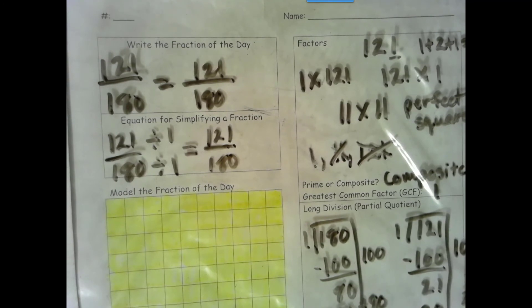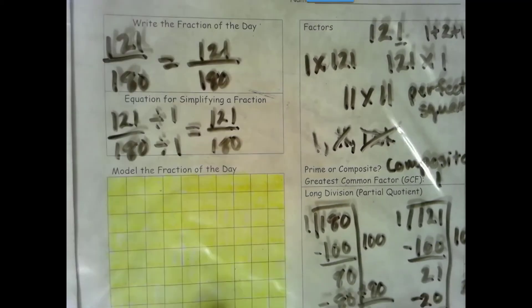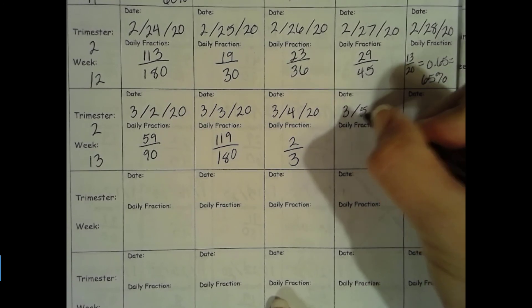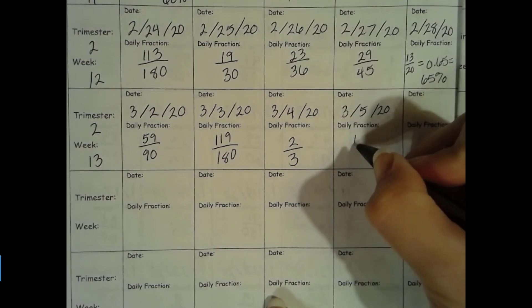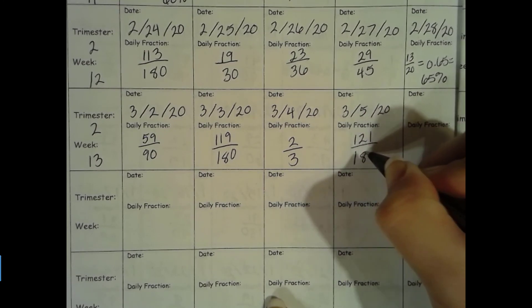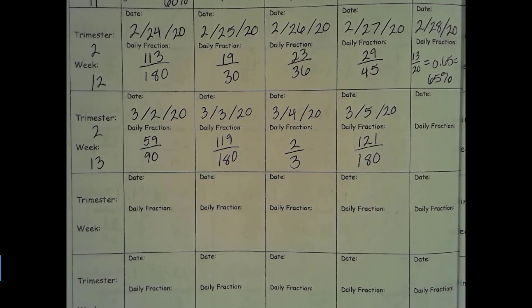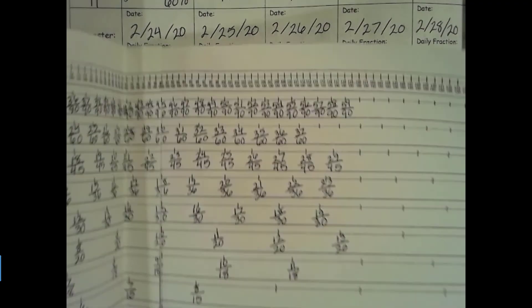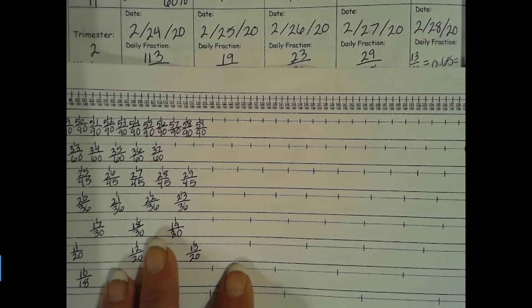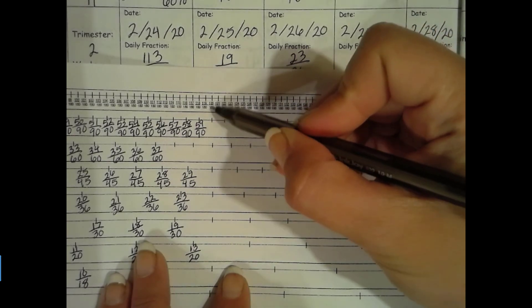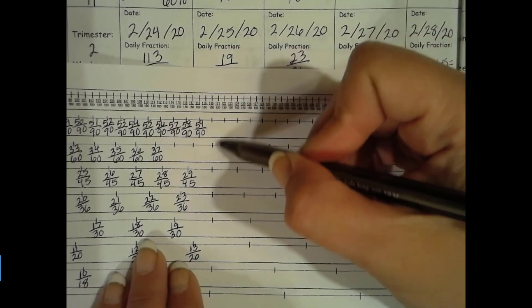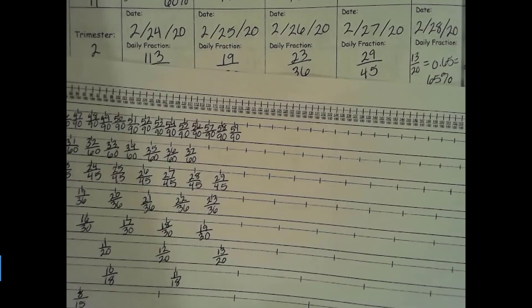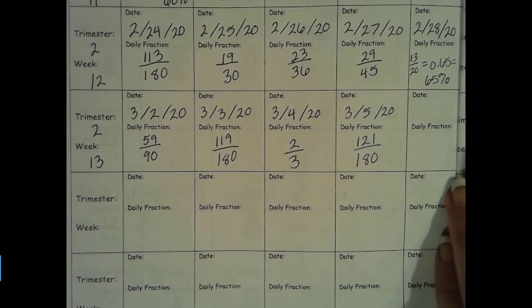Let's go ahead and fill in our data collection page. We are on trimester 2, still week 13. Today is 3/5/2020, and our fraction for today, 121 out of 180. The greatest common factor was 1, so we did groups of 1. That means you don't have to get your number line out. But I like to show you, it's right here on the number line, and that there's no lines lined up underneath it because there's no equivalent fraction in lower terms. This is our simplest form. Let's go ahead and erase your worksheet, and thank you for joining me.